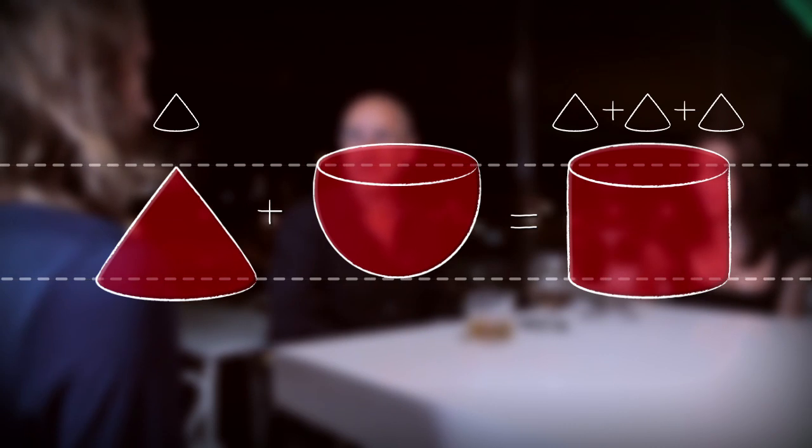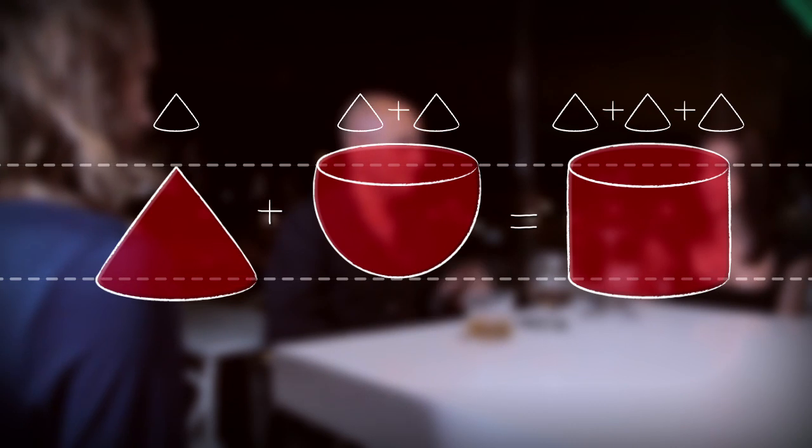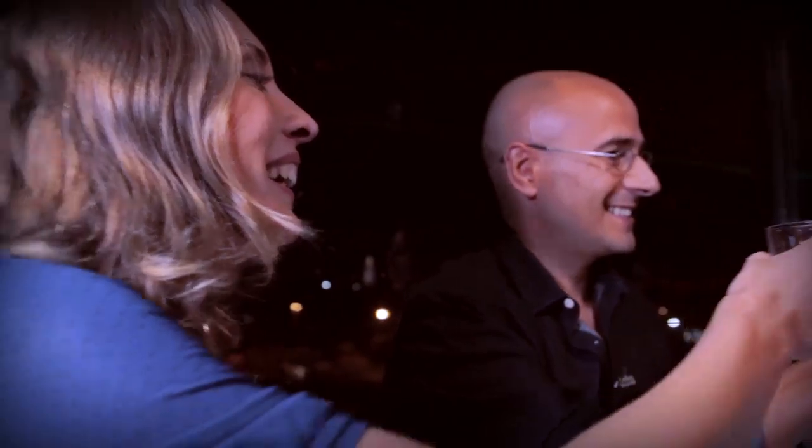Since the cone is one-third the volume of the cylinder with the same height and diameter, it's also clear that the hemisphere is two-thirds the volume of the cylinder. In theory, for all three of us to drink the same, for every sip that this girl takes from the snifter, I would have to drink two of these. And to keep up with the one drinking from a cylindrical glass, I would have to drink three of these. And I'm already behind. And this is Math.